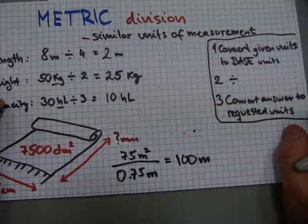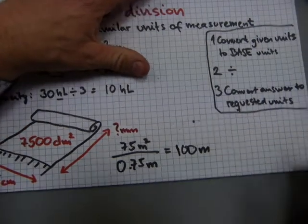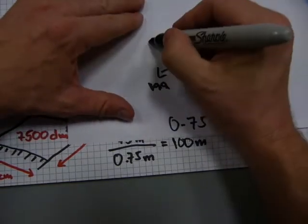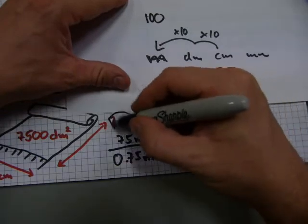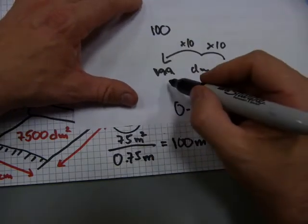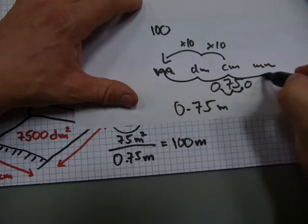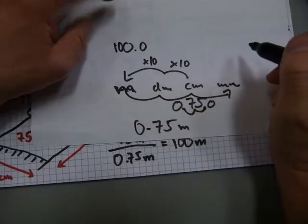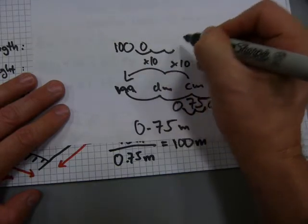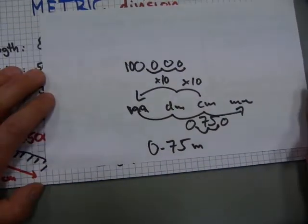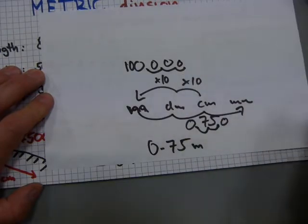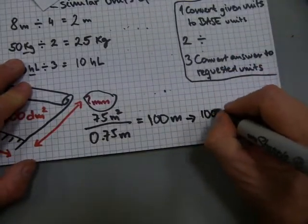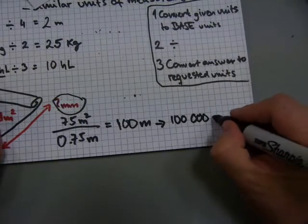Last step, we need to convert this answer to the requested units. So 100 meters is here, and it needs to be converted to millimeters. So we're going from meters one, two, three spots over to millimeters. That means 100 is the same as 100.0, and we're moving it one, two, three spots over. That's the answer, 100,000 millimeters. It converts to be 100,000 millimeters.